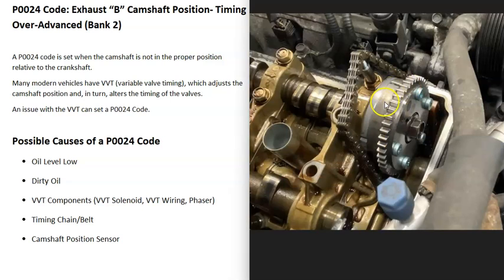There's also what's called a phaser, which is what the timing chain or timing belt rides on at the top of the engine. It's part of the variable valve timing system and can adjust the timing depending on engine conditions. If there's some kind of issue with the phaser, it can also cause problems.